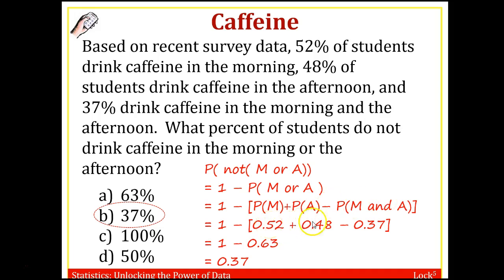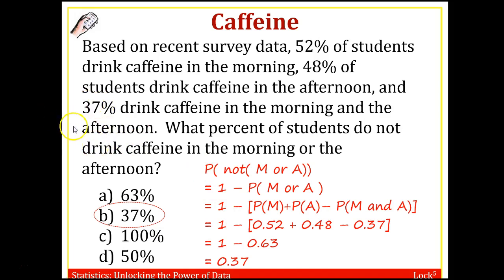So 52% drink in the morning, 48% drink in the afternoon, and 37% drink both morning and afternoon — we don't want to double count that. Adding 52 and 48 gives us 100%, then subtract 37% who drink both, giving 63%. So 63% drink caffeine in the morning or afternoon or both, and subtracting from 1 gives us 37%. This is an important problem — you should be able to go through this analysis using multiple formulas and multiple events.